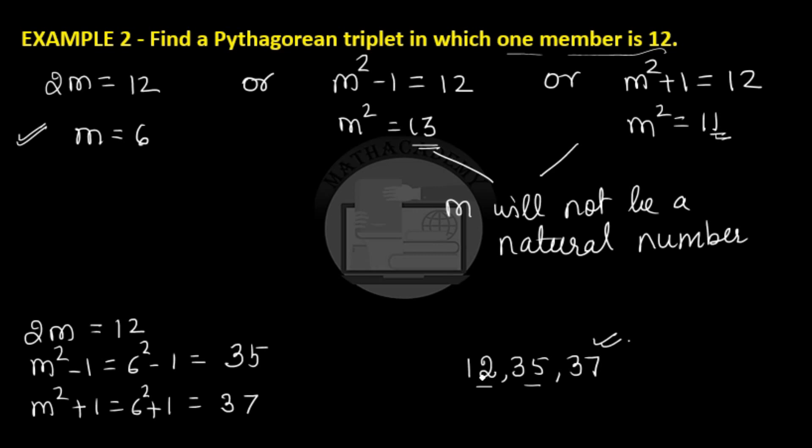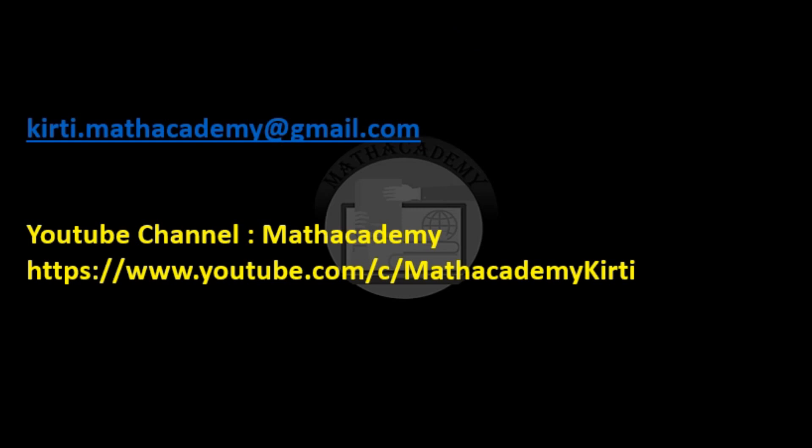So I hope it is understood. How do we determine the Pythagorean triplet using the properties of square numbers? Any doubts regarding this property and the examples which we have done, you can send me an email at kithi.mathacademy at gmail.com. This is my YouTube channel, Math Academy. If you have liked my videos, please don't forget to like, share and subscribe. Thank you.